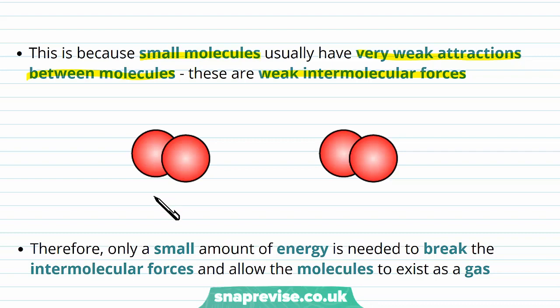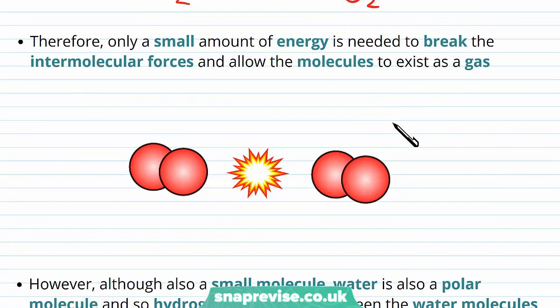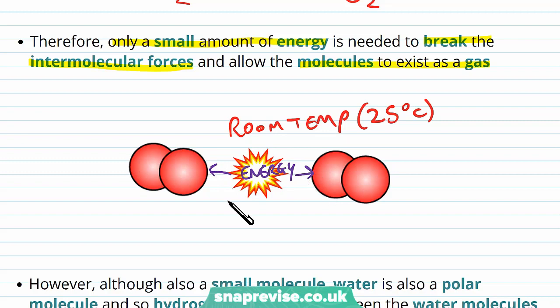The attraction between one O2 molecule and another is very weak because they're so small. We call it a weak intermolecular force because it's between the molecules. In order to break these apart and allow them to be independent, we only had to add a small amount of energy to break the intermolecular force and allow the molecules to exist as a gas. Even at room temperature, about 25 degrees C, the energy needed to break apart the intermolecular force was already enough. These oxygen molecules exist as a gas already because the energy needed is so low.